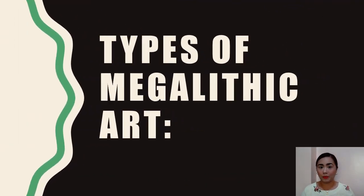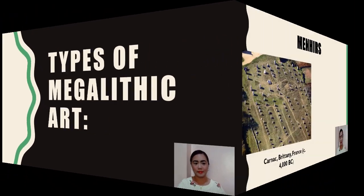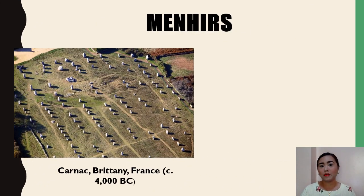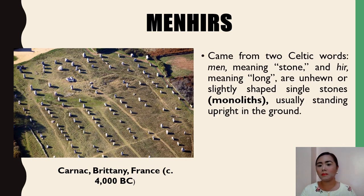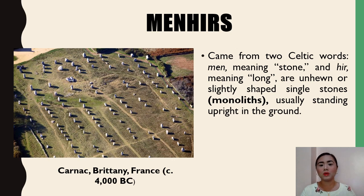During the Neolithic period, a new form of art was created — megalith or megalithic art. There are three different types of megalithic art. The first type is the Menhir, from two Celtic words: men meaning stone, and hir meaning long. These are unhewn or slightly shaped single stones — monoliths — usually standing upright in the ground. You can see an example of a Menhir located in Carnac, Brittany, France.